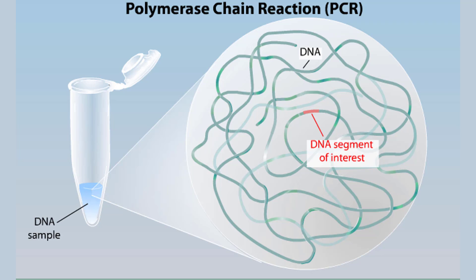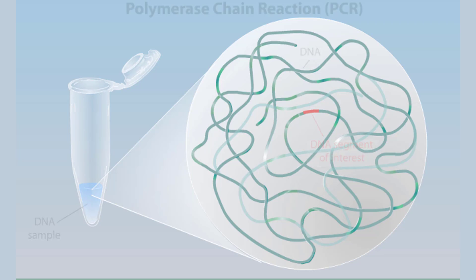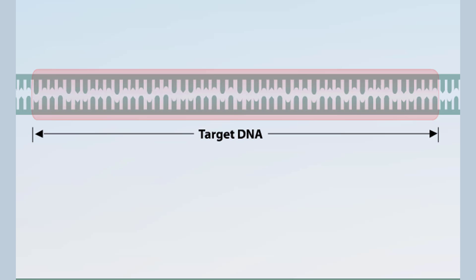With PCR, an investigator can amplify a single copy of a DNA segment into billions of identical copies. The DNA segment of interest or target DNA is indicated in red.